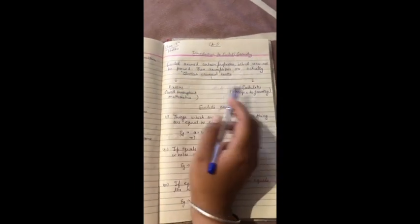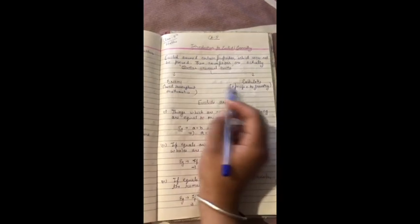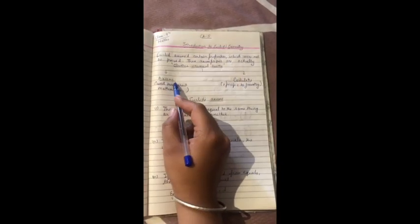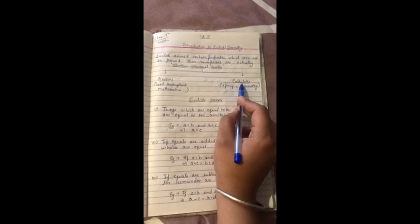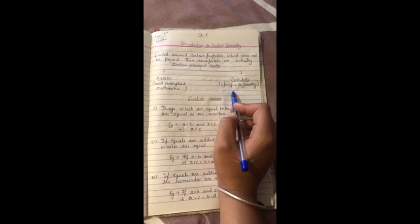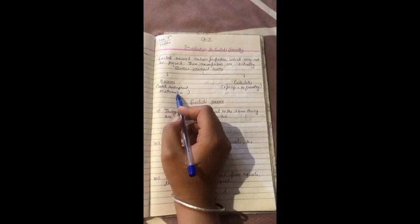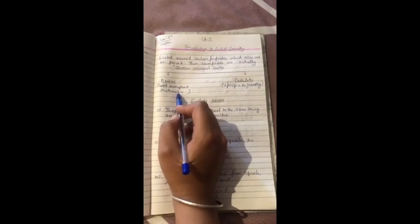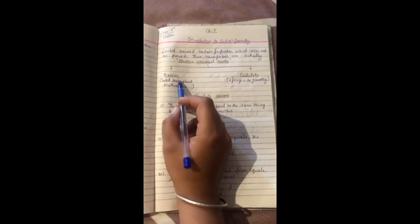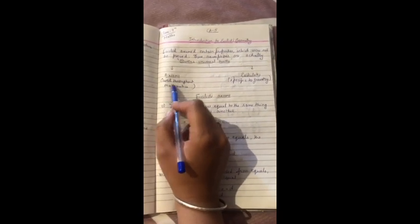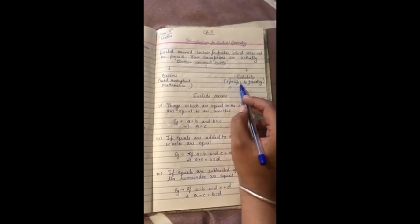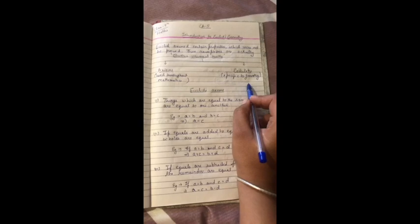Euclid has divided these into two parts: axioms and postulates. Now what is axiom and what is postulate? Postulates are specifically talking about geometry shapes. Axioms are used throughout mathematics, but postulates are especially specific to geometry only.